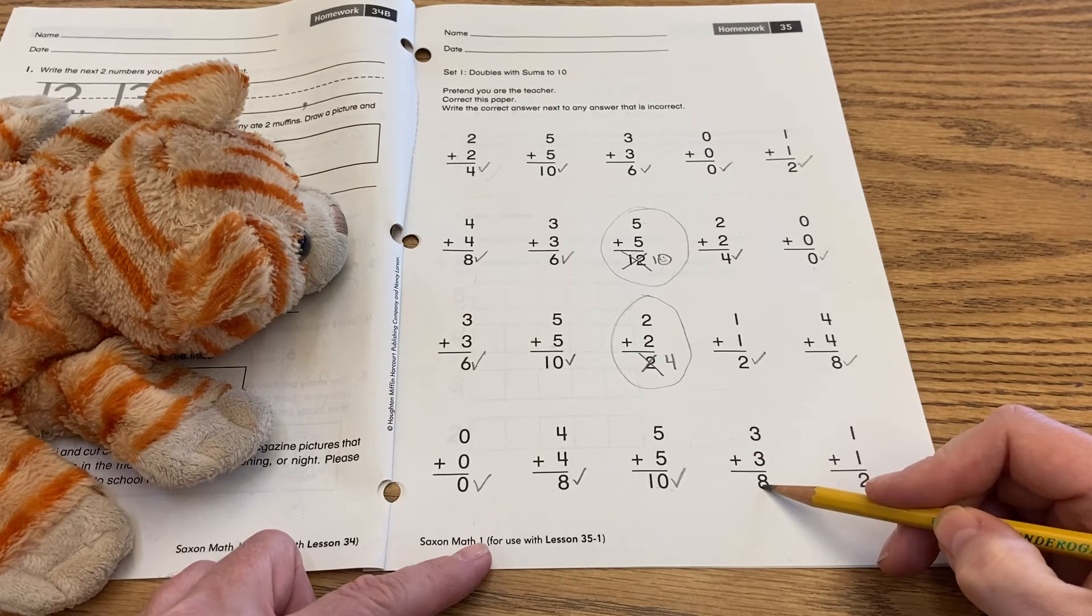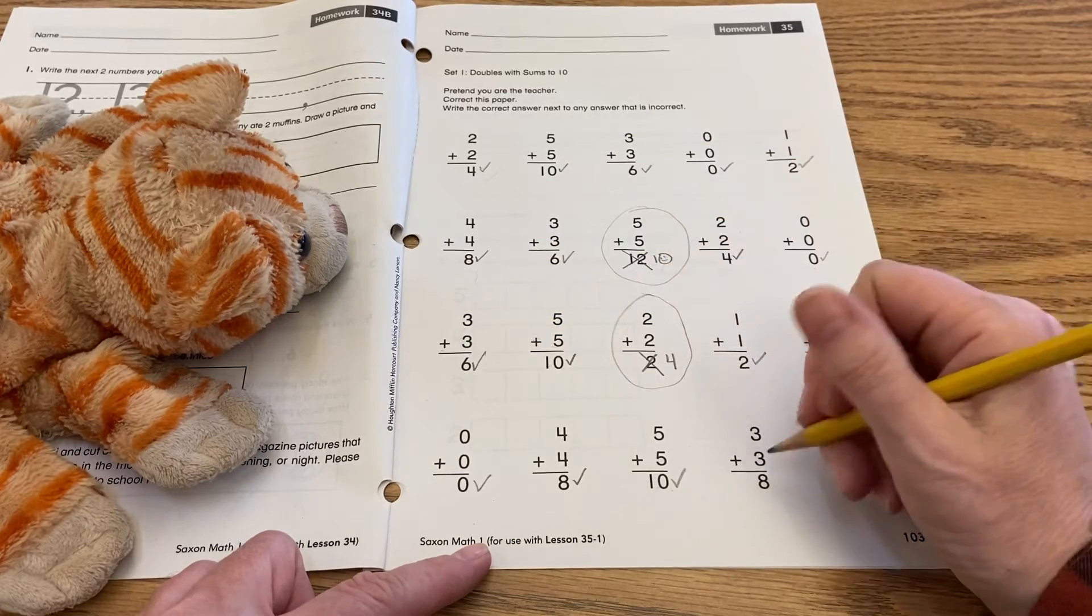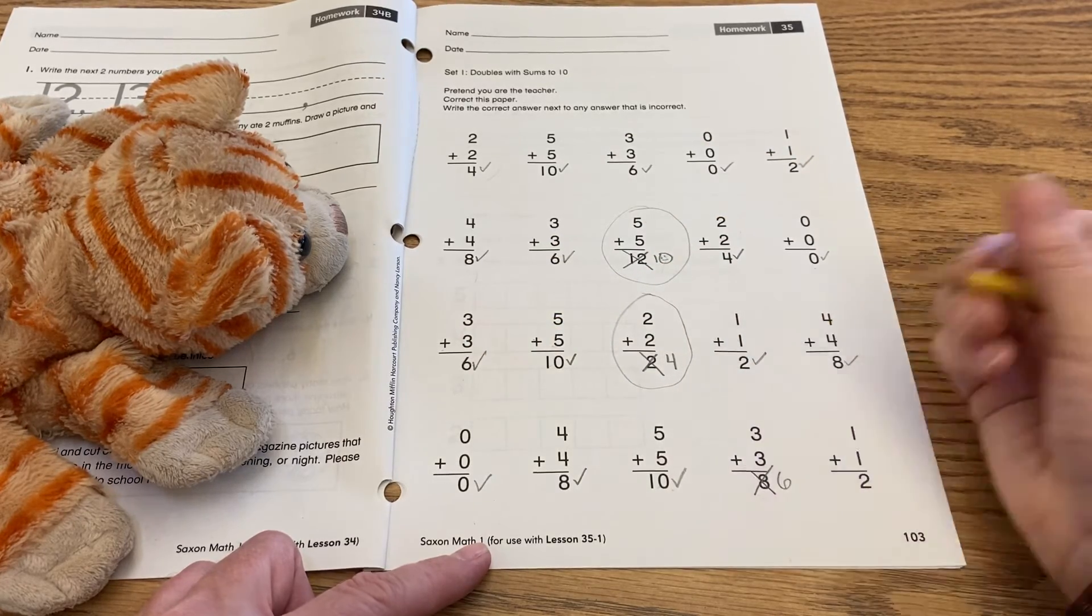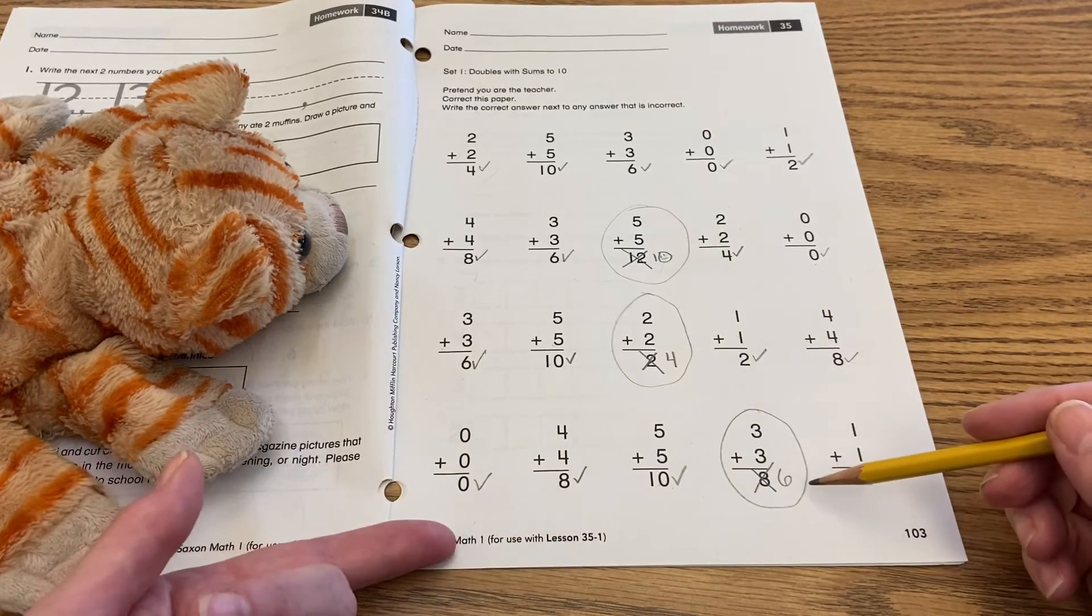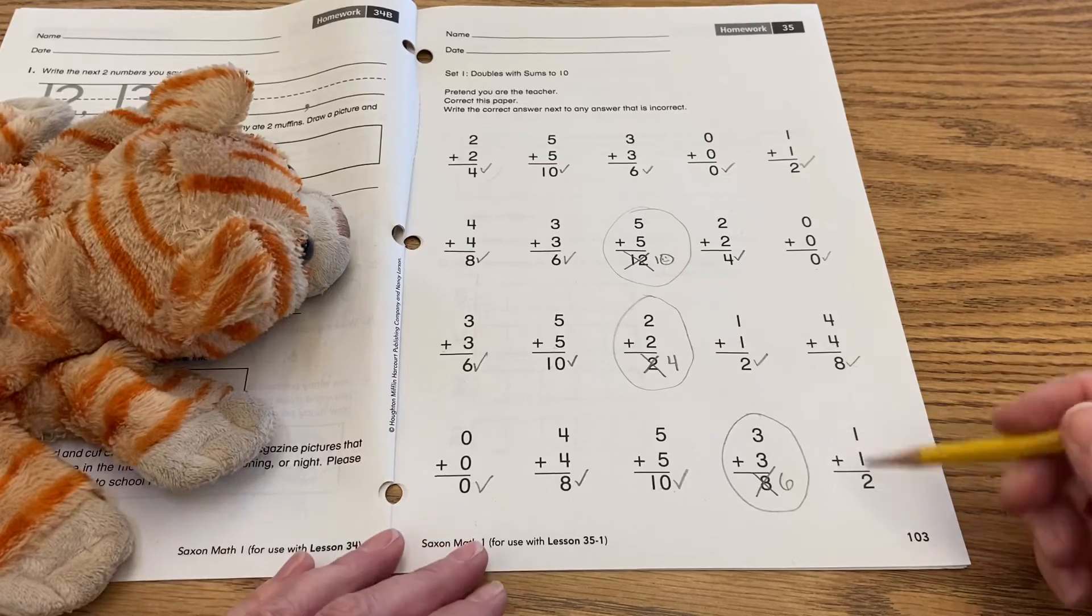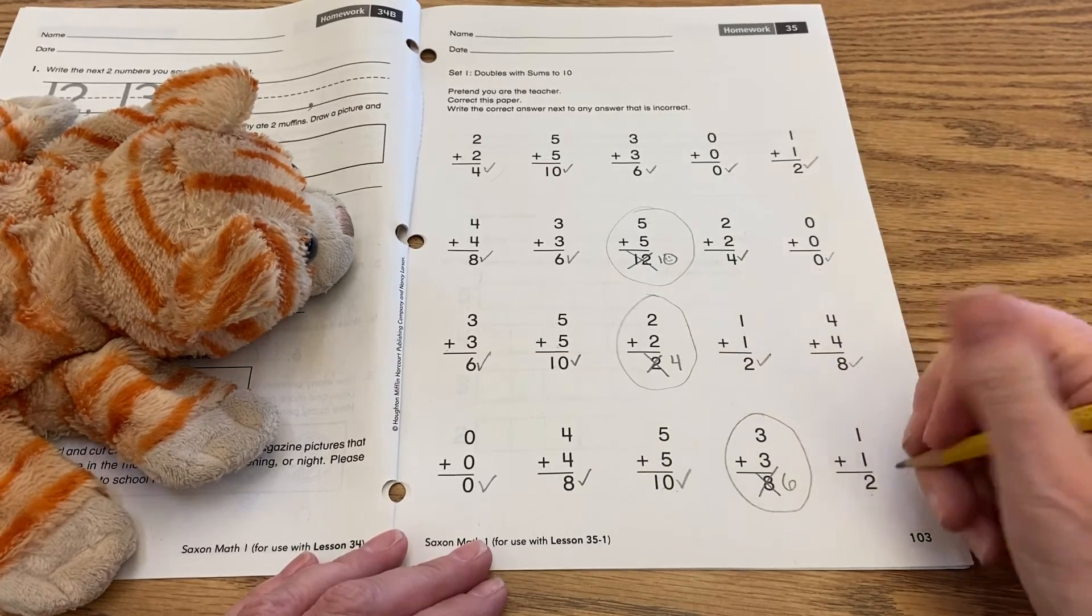Three plus three equals eight. Ah, so I think we solved that already right over here. Three plus three equals six. So we have to cross out this eight. Put our six. Circle that one so that one was one that CaliCat made a mistake on. And how about this one? One plus one equals two. That one's right up here. We proved that with our fingers.